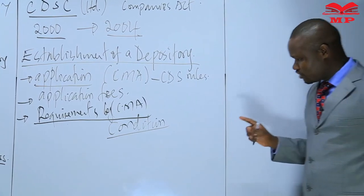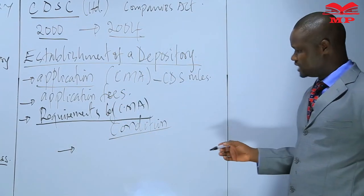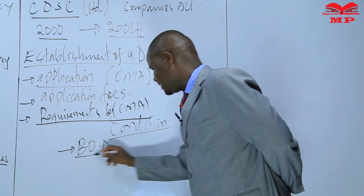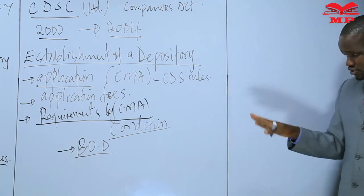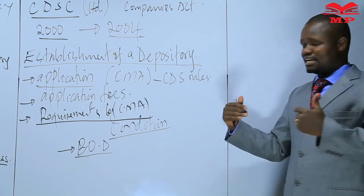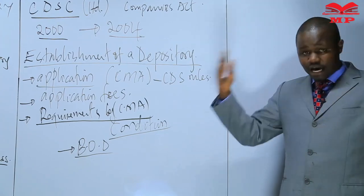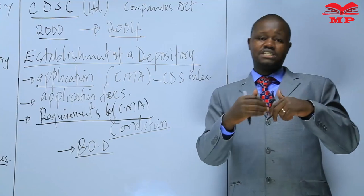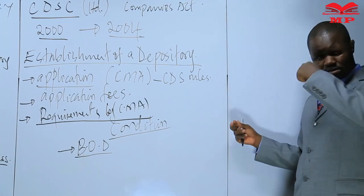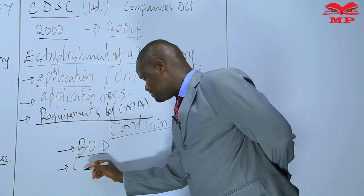Some important conditions that the CMA will insist on include matters to do with the board — the applicant must have a board with a specific composition as per the requirements of the CMA. The CMA would insist on the diversity of the board and the diversity of experience. We need a board composition that appreciates a variety of skills and systems of corporate governance, with both executive directors and non-executive directors on board.